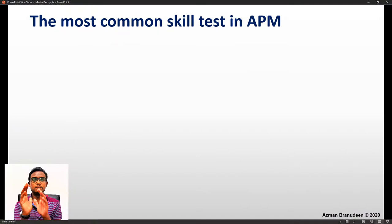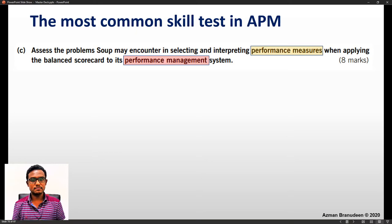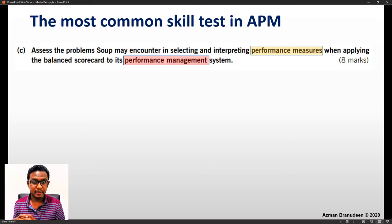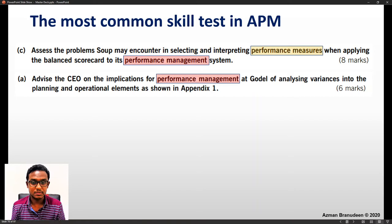If you are a student training yourself and wanting to take the APM or P5 paper in the future, the most common skill tested in Advanced Performance Management is something I can illustrate. Here is a past paper question: 'Assess the problems Soup may encounter in selecting and interpreting performance measures when applying the Balanced Scorecard to its performance management system.' We continuously see the phrases 'performance measure,' 'performance measurement,' and 'performance management' embedded within questions.